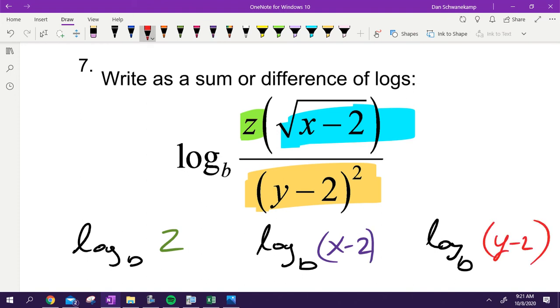Log base b, my first one is z. My second one is x minus two. Parentheses are really important, otherwise it's completely different. And y minus two. On this x minus two, it's square rooted, so I could throw that as a one-half power and put it in front. The y minus two, it's squared, I can write that as a 2 power and put that in front. The log base b of z, is that positive or negative?